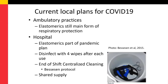At the University of Maryland, elastomeric respirators remain the main form of respiratory protection in ambulatory practices, with outpatient workers fit tested annually and assigned their own respirators. In the hospital, elastomeric respirators are part of the pandemic PPE plan. Respirators are disinfected with a four-wipe protocol after each use, and end-of-shift centralized cleaning is performed according to the Bessison protocol using a shared supply of respirators.